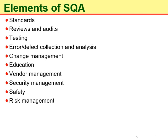Here we will discuss the elements of software quality assurance. These include standards, reviews and audits, testing, error or defect collection and analysis, change management, education, vendor management, security management, and safety and risk management.